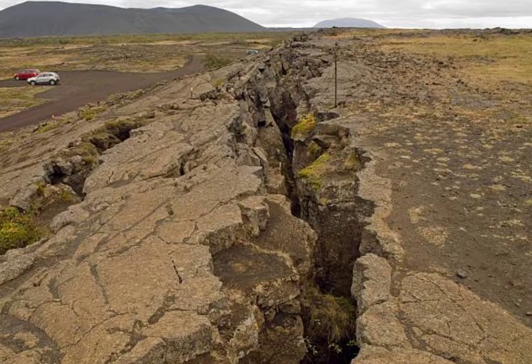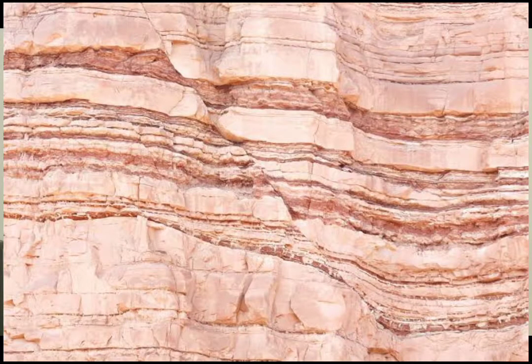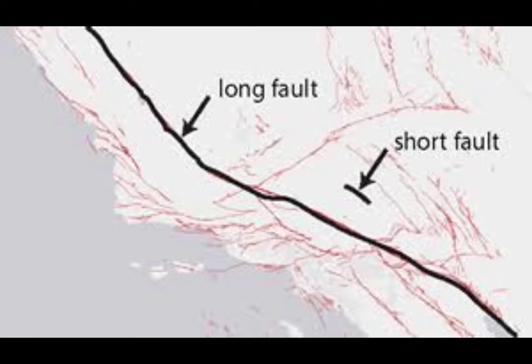To start with, let's define first what is a fault. A fault is a planar fracture in the rock of earth's crust where compressional or tensional forces cause relative displacement of the rock on the opposite side of the fracture. Faults may range from a few millimeters to thousands of kilometers. Most faults produce repeated displacement over geologic time. During an earthquake, the rock on one side of the fault suddenly slips with respect to the other.